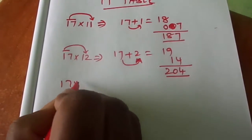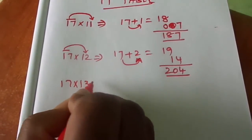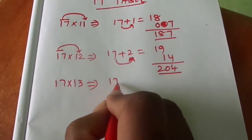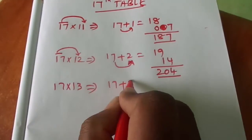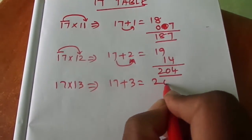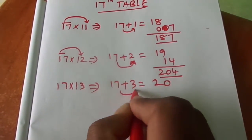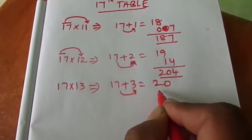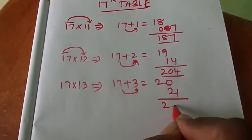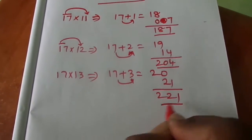17 13s: 17 plus 3 is 20. 7 threes are 21. That is equal to 221.